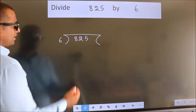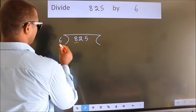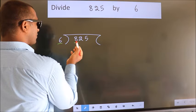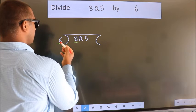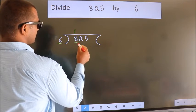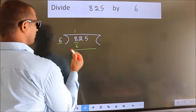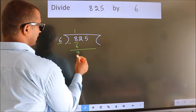Next. Here we have 8, here 6. A number close to 8 in 6 table is 6 ones, 6. Now, we should subtract. We get 2.